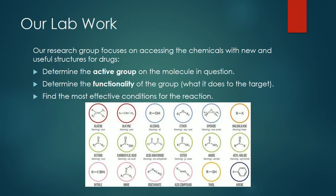Our lab work mainly focuses on accessing new and useful chemical structures. This includes determining the active, or functional, group on the molecule. The picture shows several common functional groups. At this point, we also determine what the group does to the target protein, and find the most effective conditions for the reaction to take place: the best temperature, the best solvent, the best catalyst, and so on.